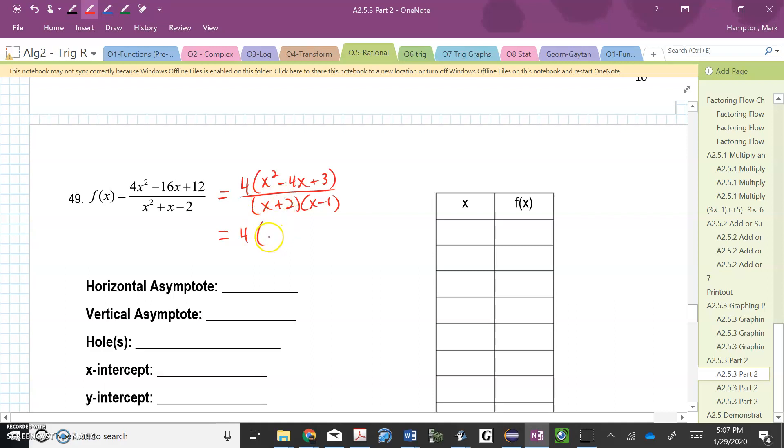The top isn't finished factoring. I can see that that's going to factor into X plus 4 and X minus 3. No, that's not right either. Let's try that again. How about X minus 3 and X minus 1 for the top. And the bottom is still X plus 2 and X minus 1.